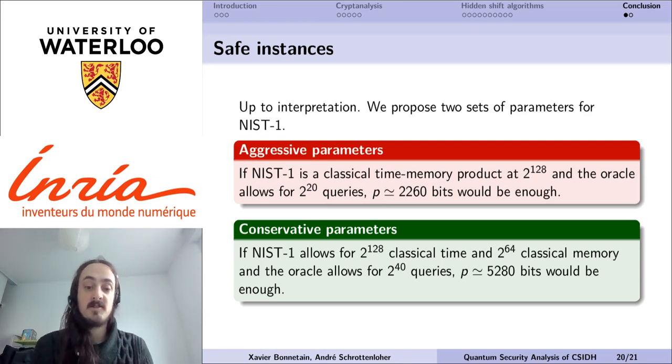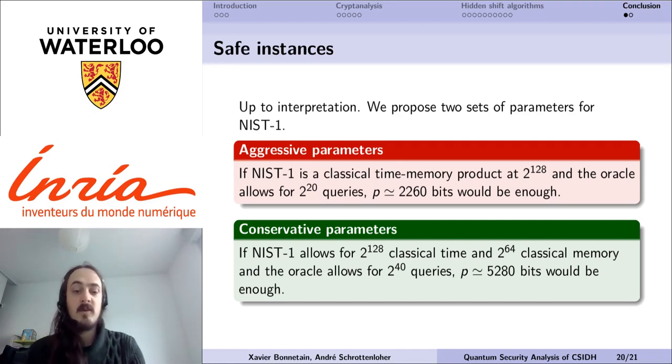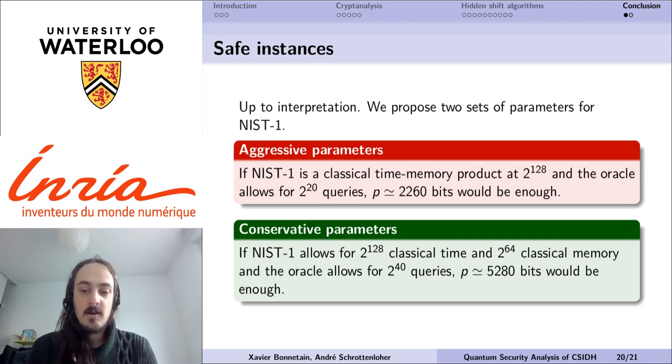If we want to be more conservative, for example, we can consider that NIST level 1 means that you can have access to 2 to the 128 classical time and 2 to the 64 classical memory, and if you are more optimistic on the quantum oracle, we can consider that it allows for 2 to the 40 quantum queries, and in that case we would need a much larger prime, so roughly 5000 bits.